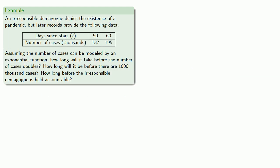Or we could consider a totally unrealistic case. In this case, an irresponsible demagogue denies the existence of a pandemic, but later records provide the following data. Assuming the number of cases can be modeled by an exponential function, how long will it take before the number of cases doubles? How long will it be before there are 1,000,000 cases? And how long before the irresponsible demagogue is held accountable?